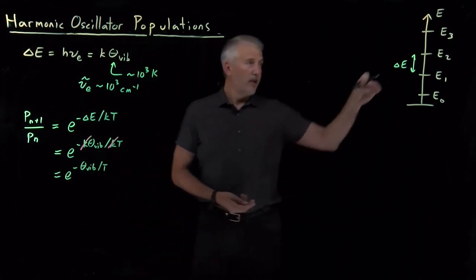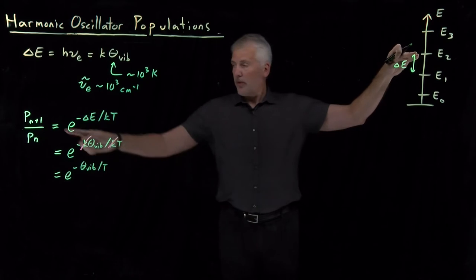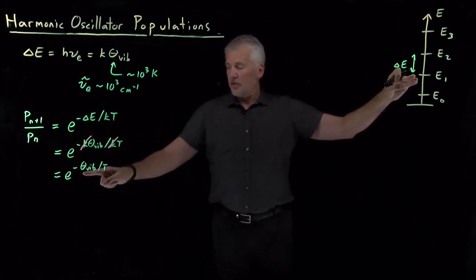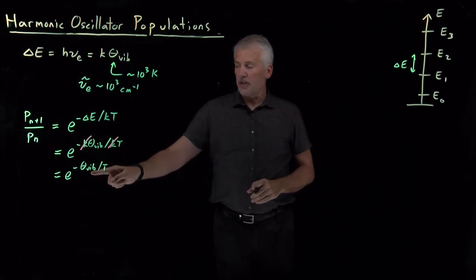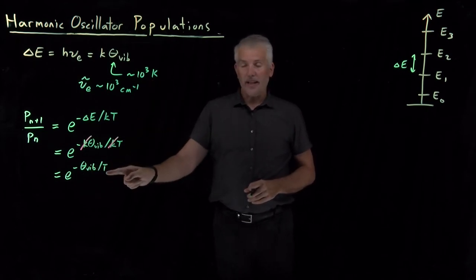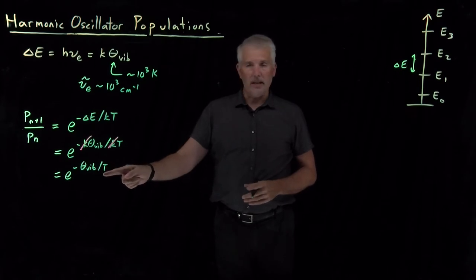So the population of an upper level relative to the population of the level below it is this exponential. Up in the exponent is this ratio of the vibrational temperature, several thousand Kelvin typically, divided by the actual temperature, maybe 298 at room temperature.